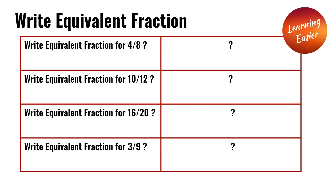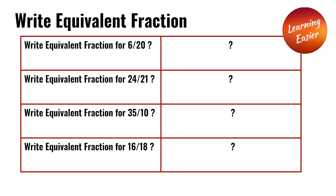Write equivalent fraction for 3 over 9. 1 over 3 is an equivalent fraction for 3 over 9 because we divided 3 over 9 by 3 on both sides.